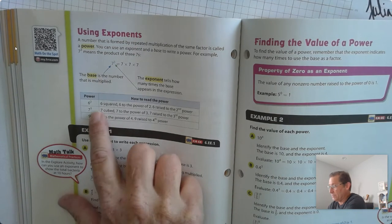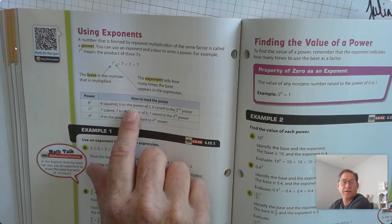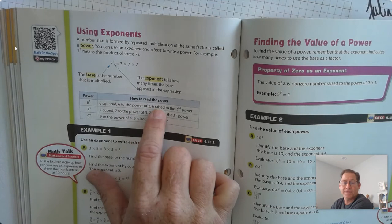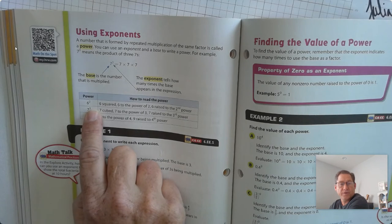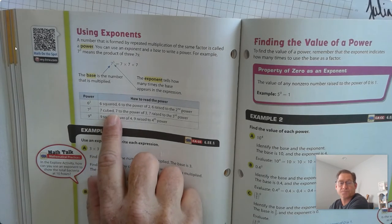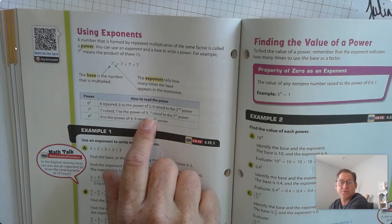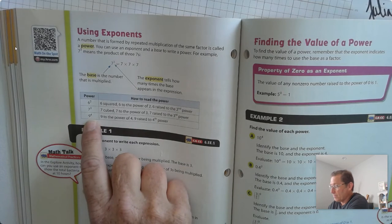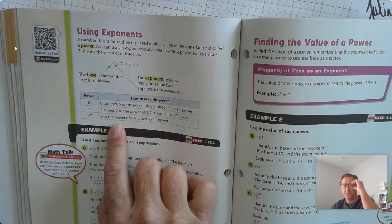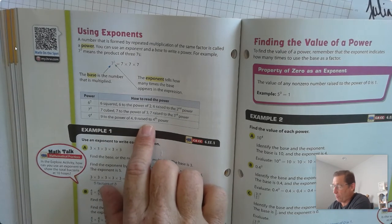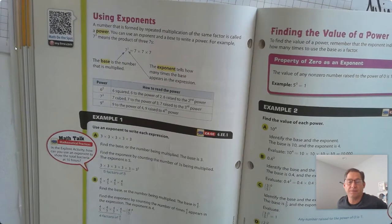So how do we read these numbers? If you raise a number to its second power, we could say it's 6 squared, 6 to the power of 2, or 6 raised to the second power. 7 with an exponent of 3 we could read as 7 cubed, 7 to the power of 3, or 7 raised to the third power. With an exponent of 4, you could say 9 to the power of 4 or 9 raised to the fourth power.